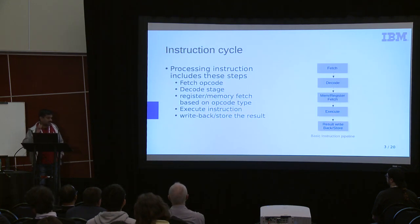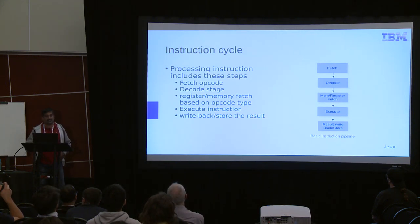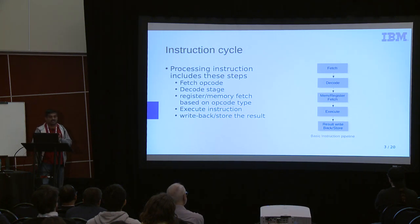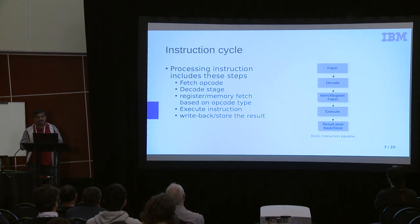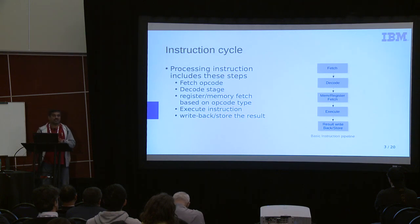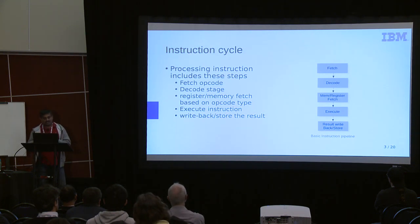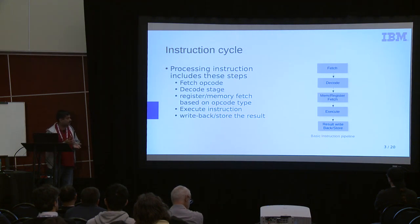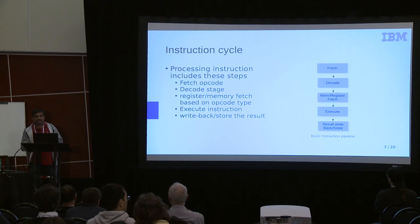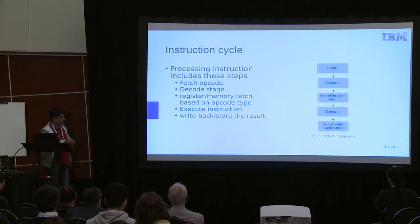The basic instruction pipeline has a fetch unit which fetches the opcode. Then it decodes to know what class of instruction it is — whether it's a load, store, branch, or ALU. Then it fetches the operands, which could be registers or memory, starts executing in the logic, and finally writes the results either to memory or into the register store.